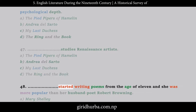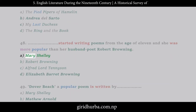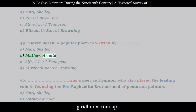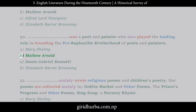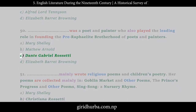Question 48: __ started writing poems from the age of 11 and she was more popular than her husband poet Robert Browning. A. Mary Shelley, B. Robert Browning, C. Alfred Lord Tennyson, D. Elizabeth Barrett Browning. Question 50: __ was a poet and painter who also played the leading role in founding the Pre-Raphaelite Brotherhood of poets and painters. A. Mary Shelley, B. Matthew Arnold, C. Dante Gabriel Rossetti, D. Elizabeth Barrett Browning.